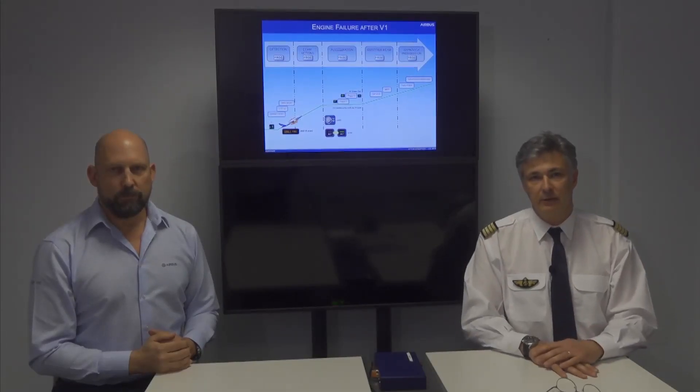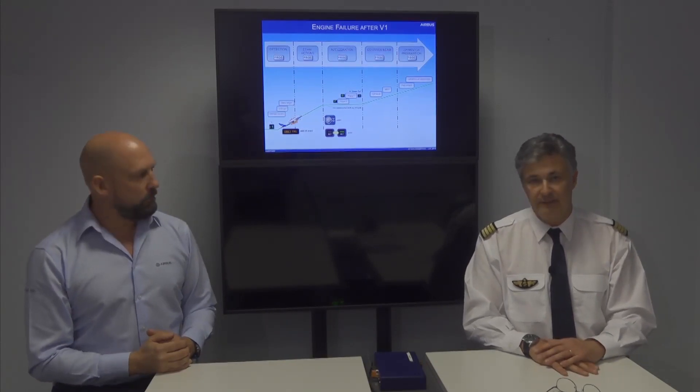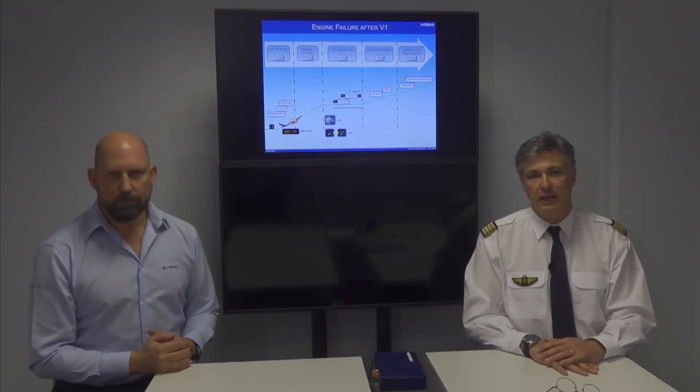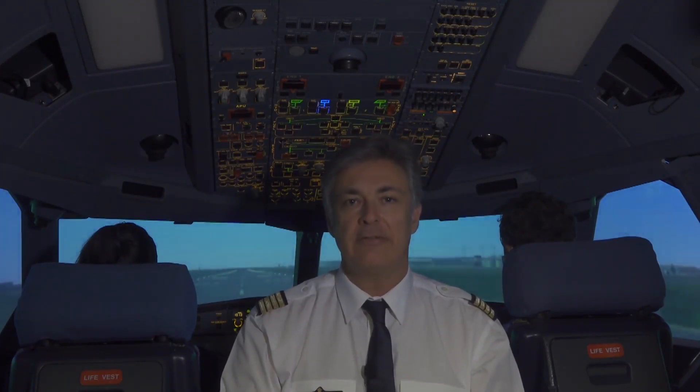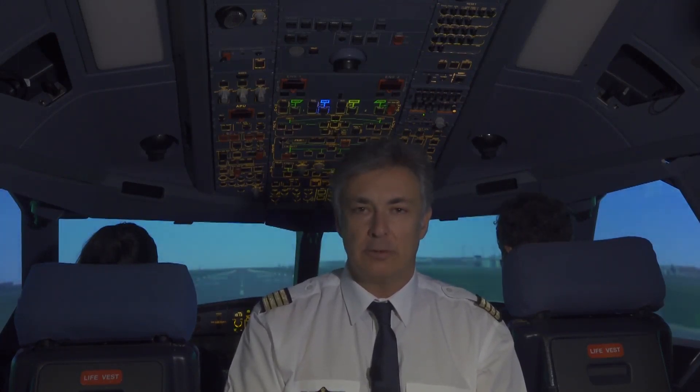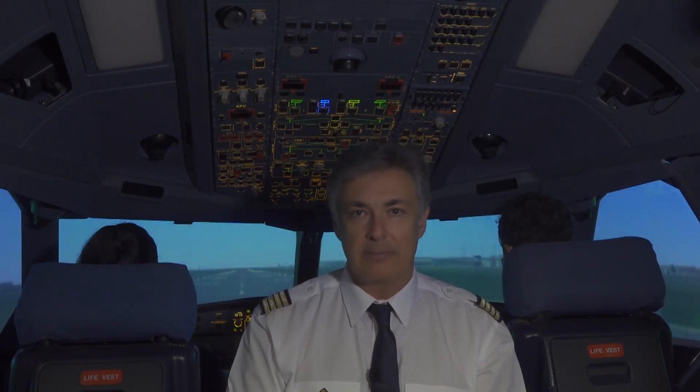Now, keeping in mind the flight control characteristics of the normal law in case of an engine failure, let's take a closer look at the Airbus recommended technique in case of an engine failure at or after V1. First, if an engine failure occurs at or above V1 — and this is valid for all other malfunctions as well — the take-off must be continued. In the case of an engine thrust loss while the aircraft is still on the ground, the pilot flying will continue to look outside and intuitively apply a rudder pedal input to stay on the runway centreline.